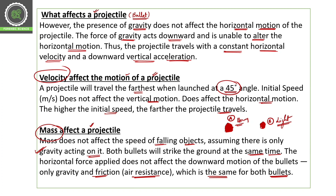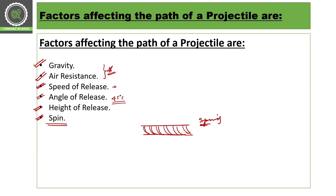First of all, what are the things that affect the projectile? We have seen that mass does not affect the projectile because air resistance and gravity will act equally on any bullet regardless of mass. It is not that a smaller bullet will have more or less gravity or air resistance — both forces affect all bullets equally at the same time. So there are 6 key points: gravity, air resistance, speed of release, angle of release, height of release, and spin.